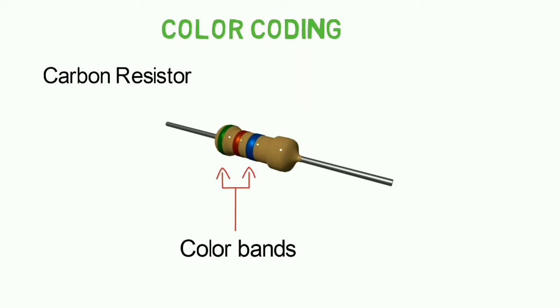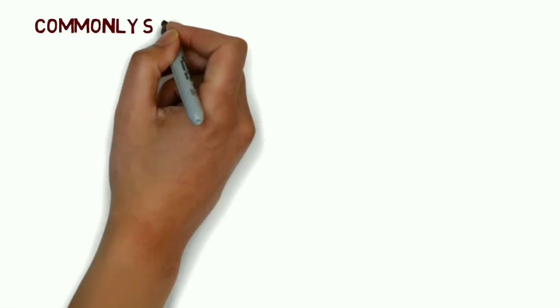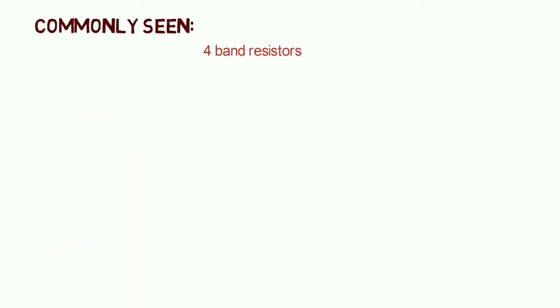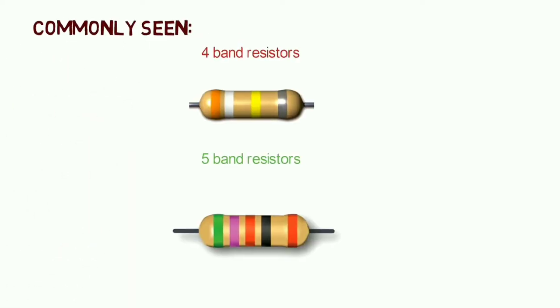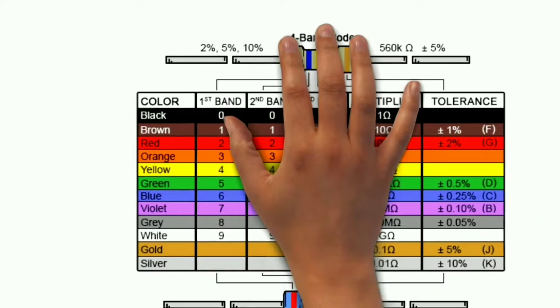There is a value for each color. Each color corresponds to a specific value. We are using the same band system. For example, there are 4-band and 5-band resistors, and we are using the same color band approach for both.